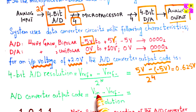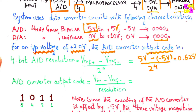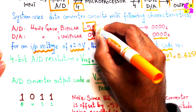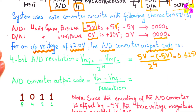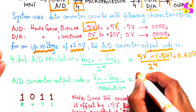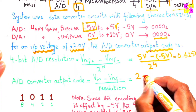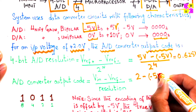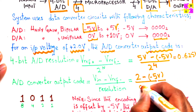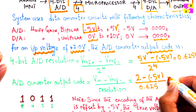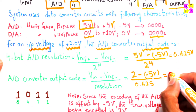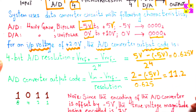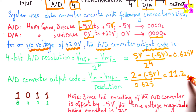The analog-to-digital converter output code equals V-in minus V-ref-negative, over resolution. Since the encoding of the ADC is offset by negative 5 volts, the true voltage magnitude being encoded is 7 volts. So we have 2 volts (the input voltage) minus negative 5 volts (the negative range), divided by the resolution of 0.625. Plugging in these numbers gives 11.2 in decimal format.